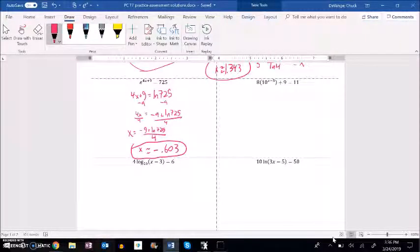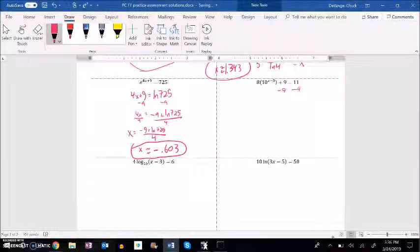We want to solve for x. So let's get this 10 to the power of all alone first. So I'm going to subtract 9 from both sides. 11 minus 9, 9 minus 9, that's 2. Okay, keep going from here, divide both sides by 8.